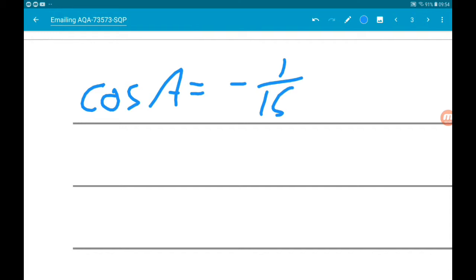We want sine of A. So we're going to use a trig identity, namely sine squared and cos squared is equal to 1.